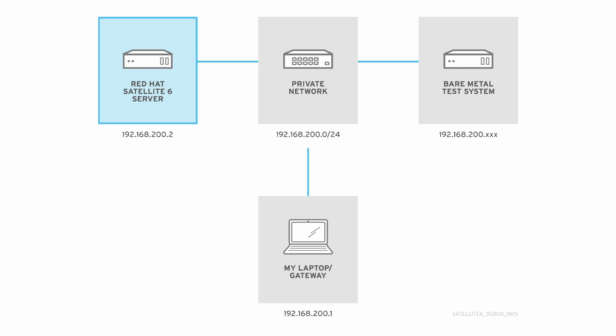The third system is my laptop, which I'll use to interact with the Satellite server, and also to act as a gateway to Red Hat's external network. It will use 192.168.200.1.